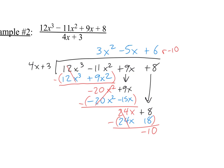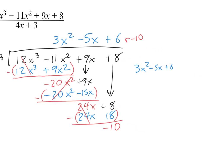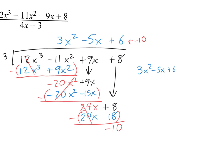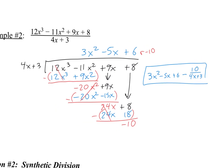What times 4x makes 24x? That's 6. 6 times 4x is 24x, and 6 times 3 is 18. I subtract: those cancel, and 8 minus 18 is negative 10. So the remainder is negative 10. The answer is 3x² minus 5x plus 6 minus 10 over (4x plus 3).